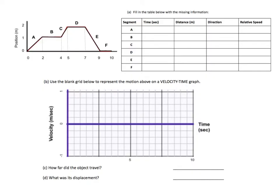So the first thing we do is we've divided up our position versus time graph into different segments where the line has changed direction. And so in this case, there are a total of six different segments.